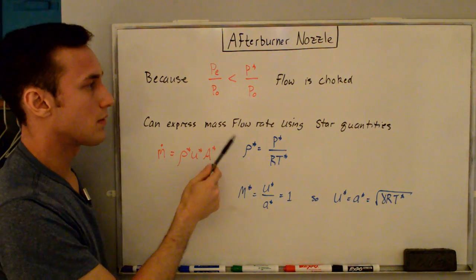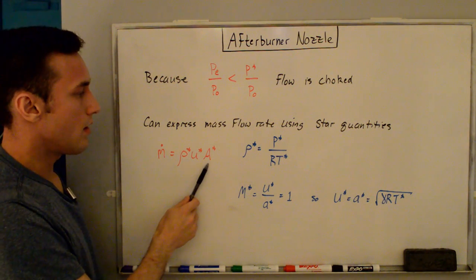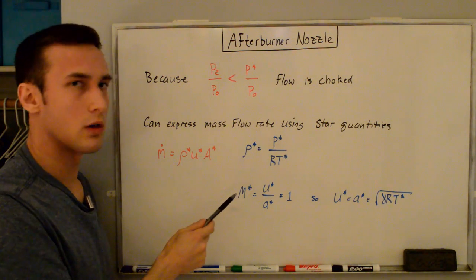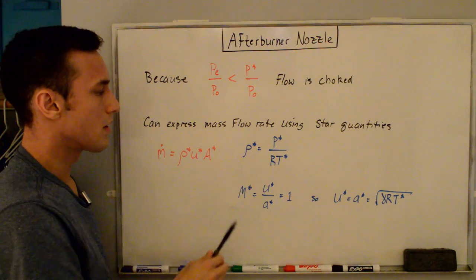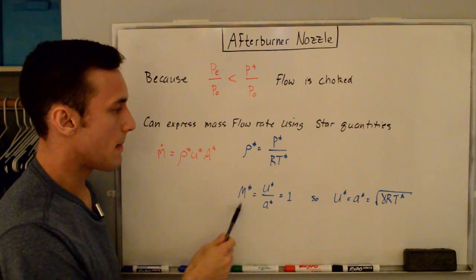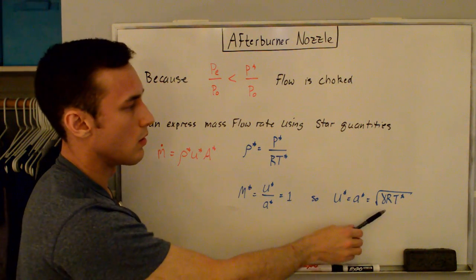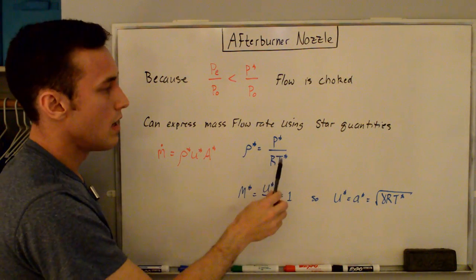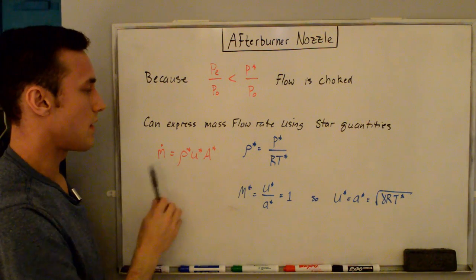We have the throat area but need ρ* and U*. From the ideal gas law for a calorically perfect gas: ρ* = P*/(R × T*). From the definition of Mach number at the star state (M = 1), U* equals the local speed of sound: U* = √(γRT*). So we need to find T* to calculate both U* and ρ*, then plug them in with the throat area to find the mass flow rate.